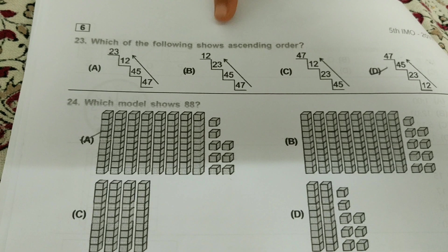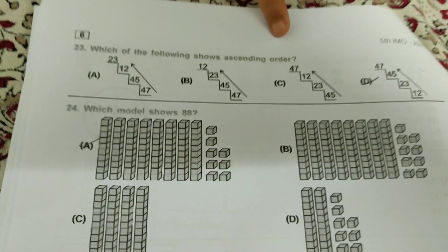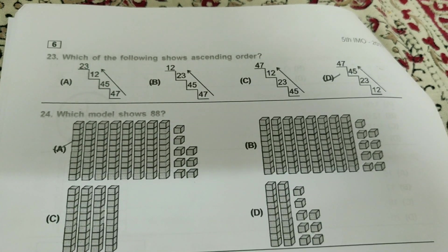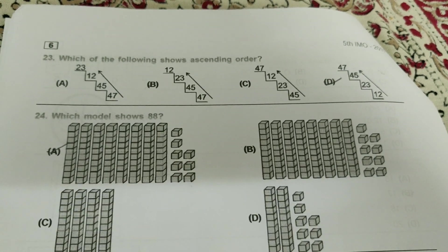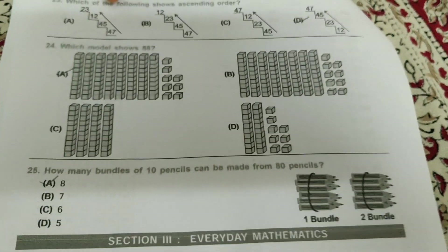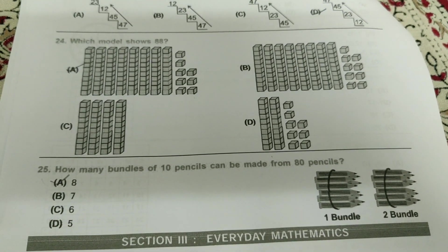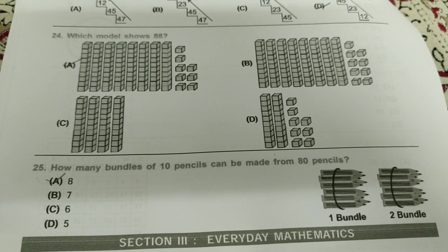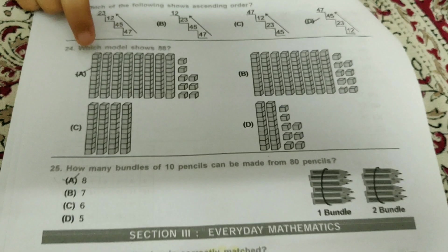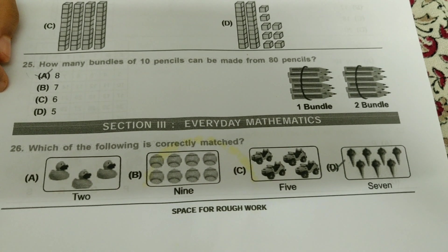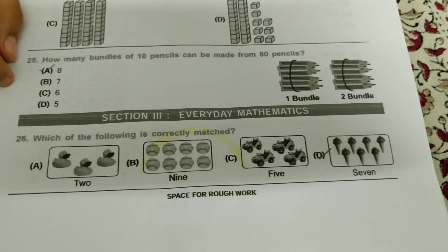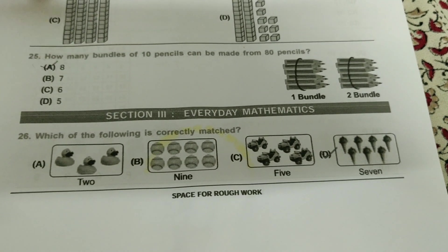Which of the following shows ascending order? So ascending order means from small to big. It's very easy, it's D bit. So which model shows 88? It's A bit. How many bundles of 10 pencils can be made from 80 pencils? A bit.